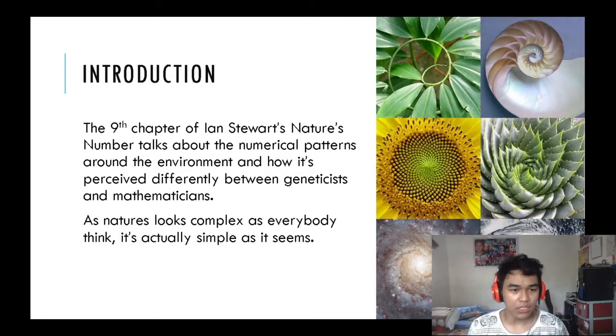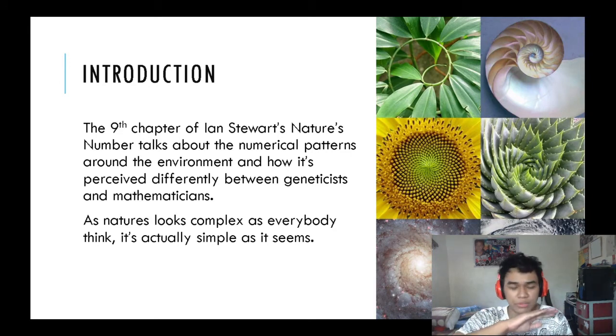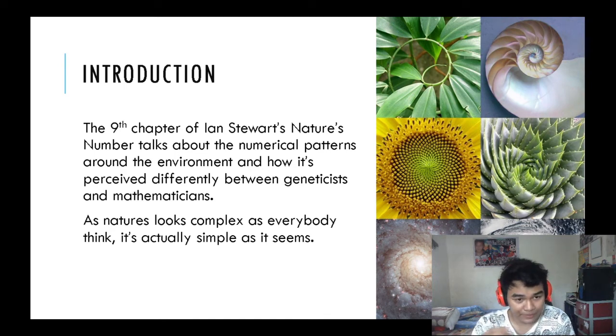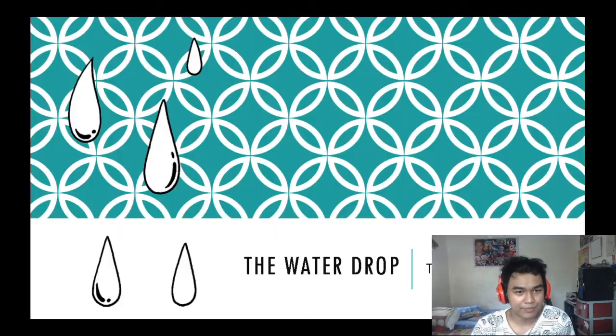Hello everyone, we are down to the ninth and last chapter of Ian Stewart's Nature's Numbers. It talks about drops, dynamics, and daisies. The ninth chapter is really all about the numerical patterns in nature, how beautiful and symmetrical they look, and how they are perceived differently between geneticists and mathematicians. As nature looks complex as everybody thinks, it's really not according to Ian Stewart.